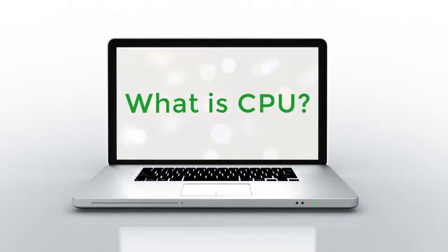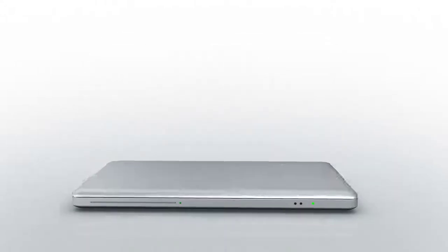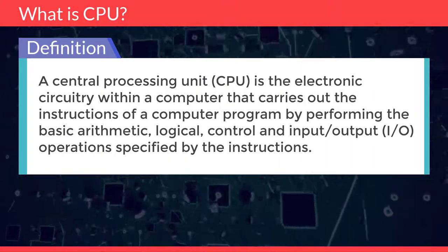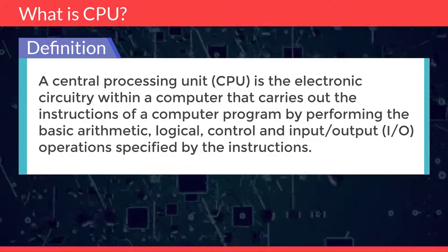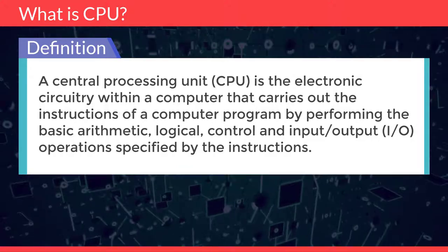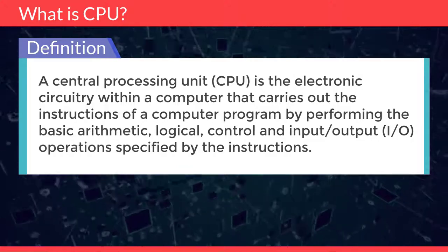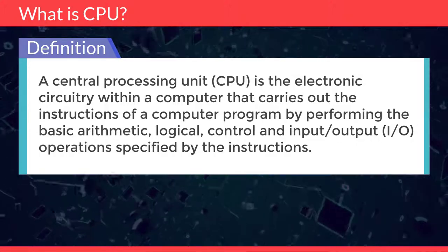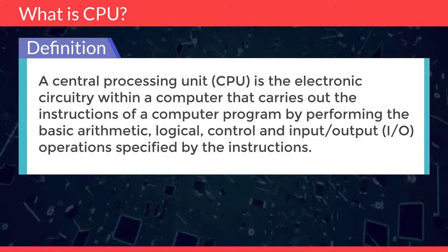What is CPU? A central processing unit is the electronic circuitry within a computer that carries out the instructions of a computer program by performing the basic arithmetic, logical, control and input-output operations.